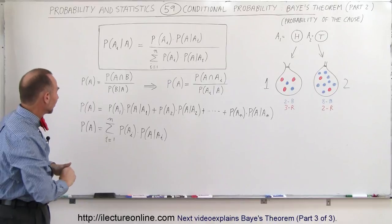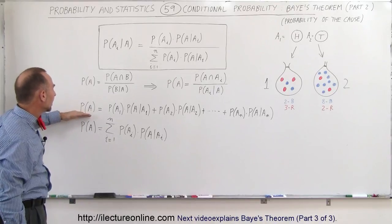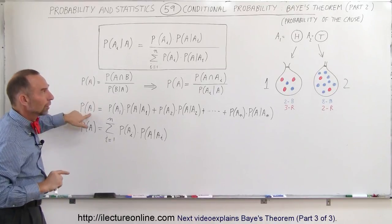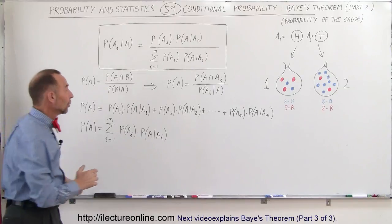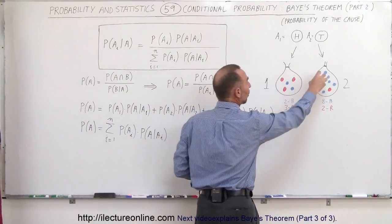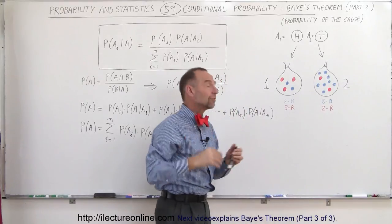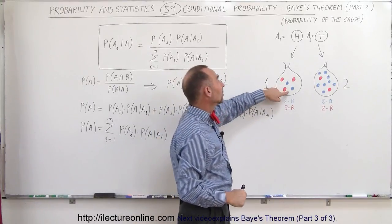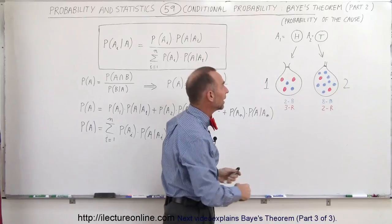And where does that come from? That simply comes from finding the probability that event A will occur. Now, what is event A? Event A is picking one of these marbles out of a bag in our previous example, which is the outcome of us having either tossed a heads or a tails.